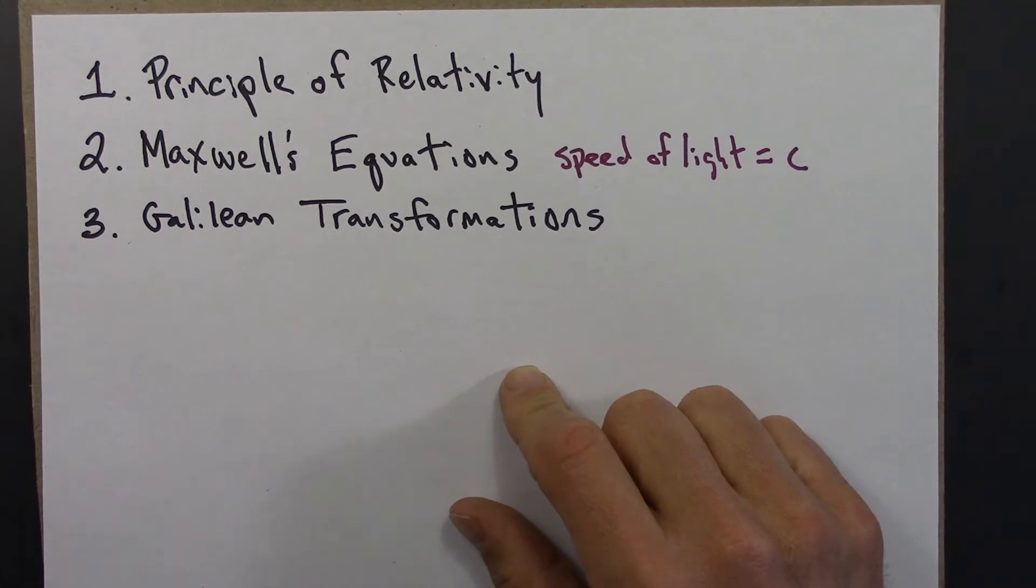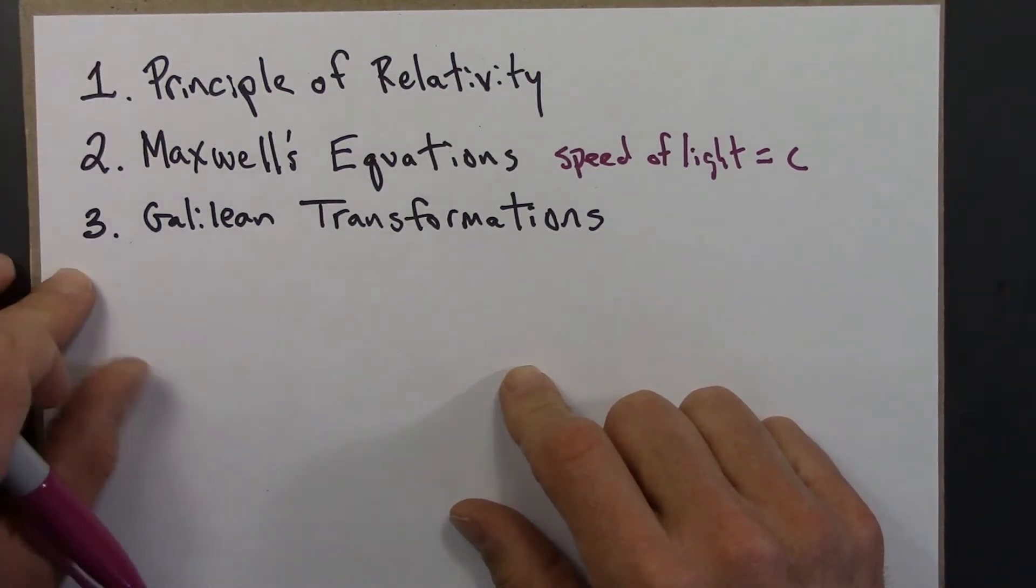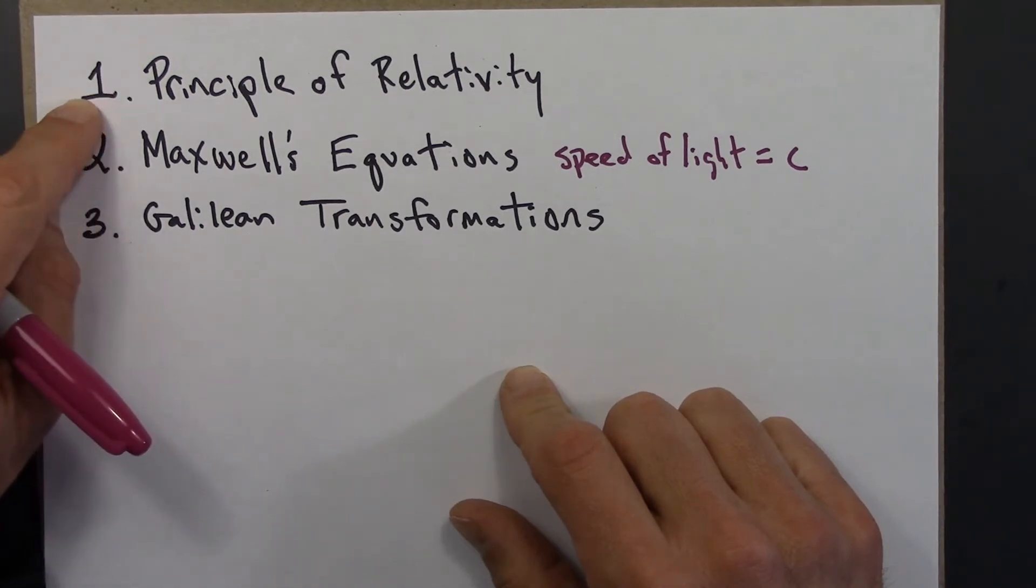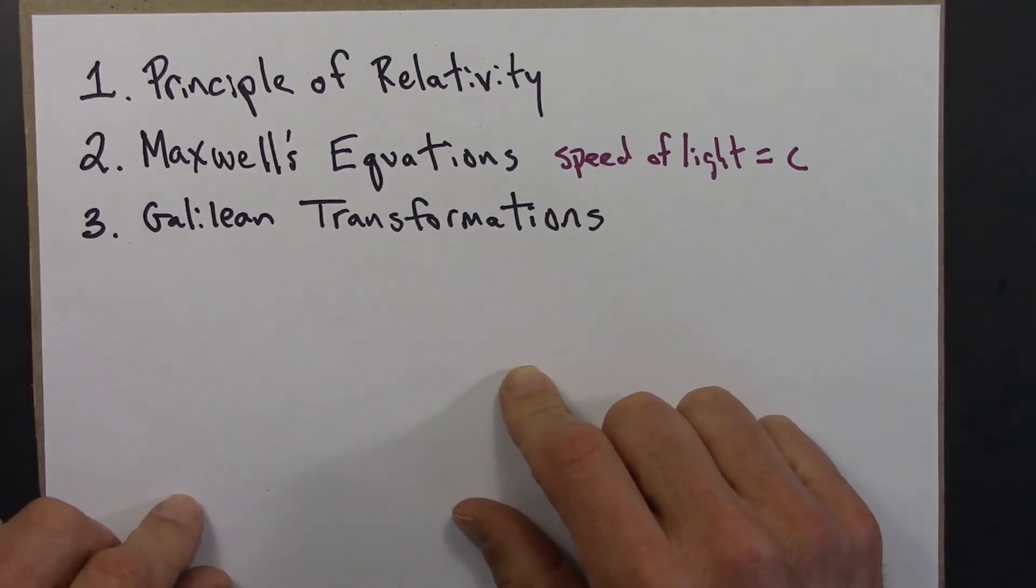So here's where things stand towards the end of the 1800s. We have these three statements. One is the principle of relativity, that the laws of physics are the same in all inertial reference frames.